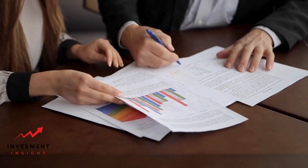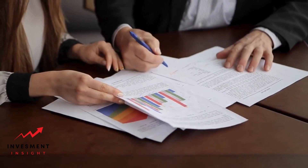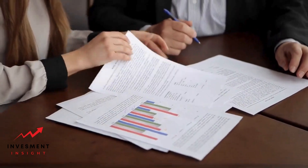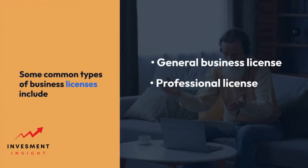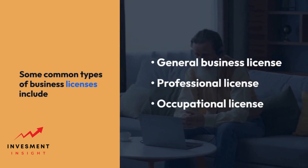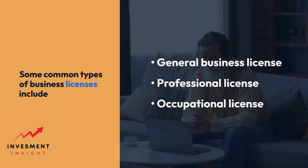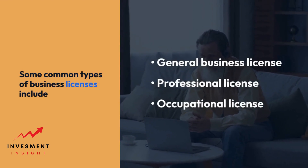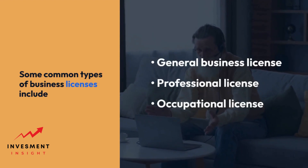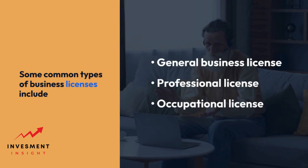Types of business licenses: There are many different types of business licenses depending on the nature of the business and the location. Some common types include: General Business License — a basic license that allows a business to operate within a specific jurisdiction. Professional License — required for businesses that provide professional services such as doctors, lawyers, or accountants.